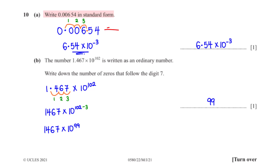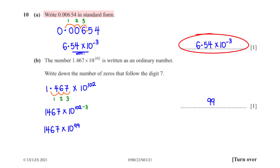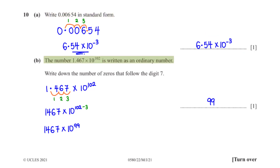Write 0.00654 in standard form. Move the decimal point to after the first non-zero digit to get 6.54. Since we moved the decimal point 3 places to the right, we multiply by 10 to the power negative 3, giving the final answer 6.54 times 10 to the power negative 3.